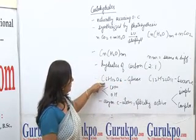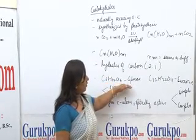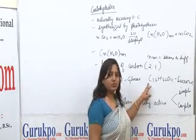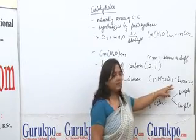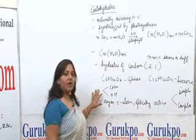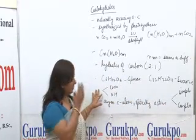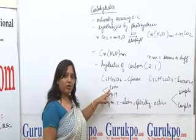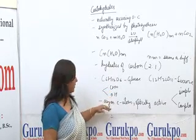For example, the formula C6H12O6 is called glucose, and C12H22O11 is called sucrose. In carbohydrates, we have two functional groups: the aldehydic or carboxylic group, and the hydroxyl group.